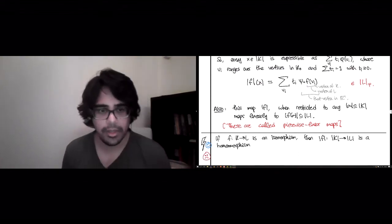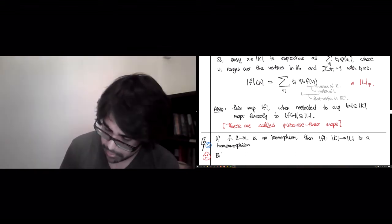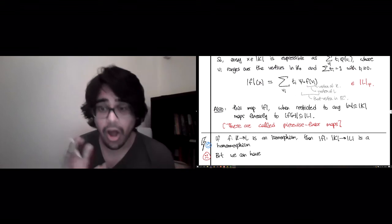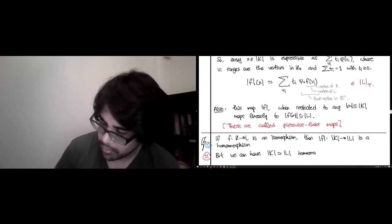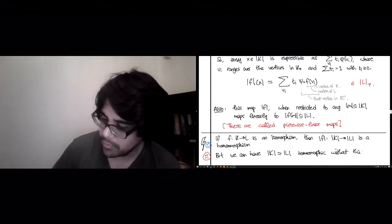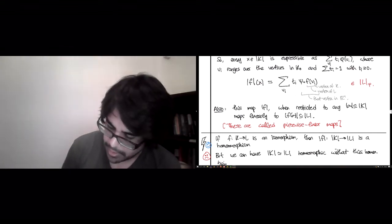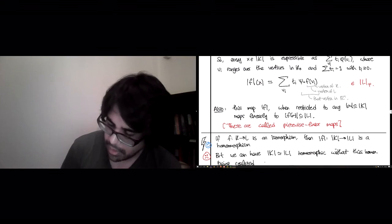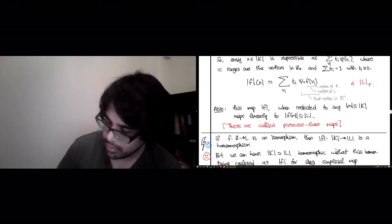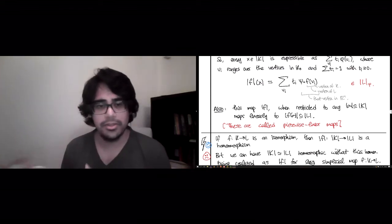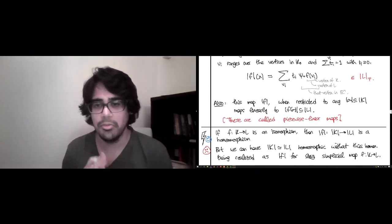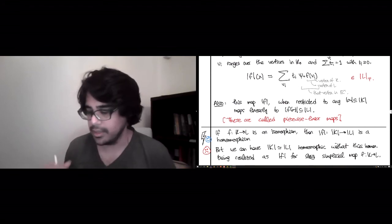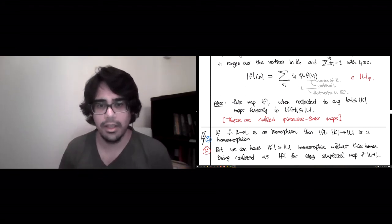But the part that is a bit annoying is that it is possible that the converse is depressingly not true. We can have K homeomorphic to L without this homeomorphism being realized as F for any simplicial map F from K to L or back from L to K. It doesn't matter because it's a homeomorphism. These can be homeomorphic, but this homeomorphism cannot be achieved by the class of all continuous maps induced by simplicial maps between K and L.